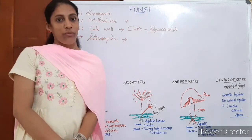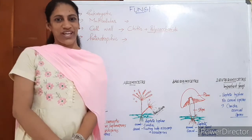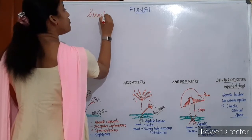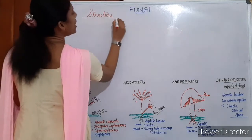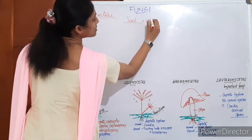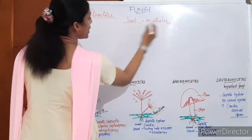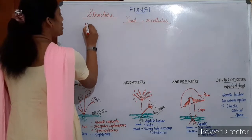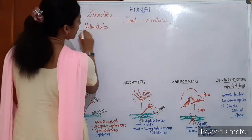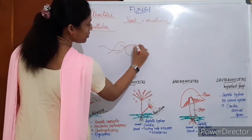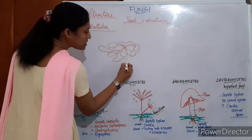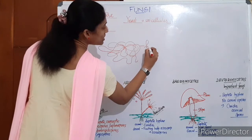Their main reproduction strategy is by forming spores. About the structure of fungi: multicellular fungi are mostly filamentous — they show a filamentous body. The filamentous body of fungi is called hypha (plural: hyphae).